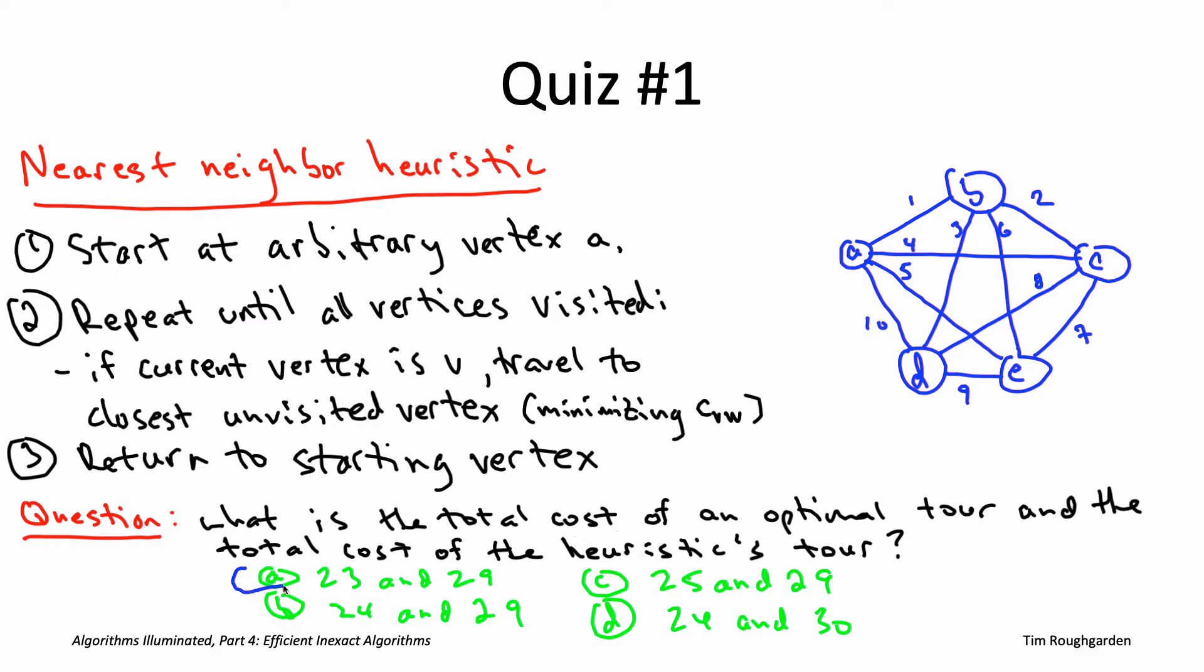The answer is A. The minimum possible tour cost is 23, and the tour cost of the nearest neighbor heuristic is 29. Let's see those two facts in reverse order, starting with the nearest neighbor heuristic. It starts at vertex A, looks at the other four vertices, and says the cheapest edge in the whole graph is adjacent to me and takes me to B. So that's what I'm taking in the first iteration.